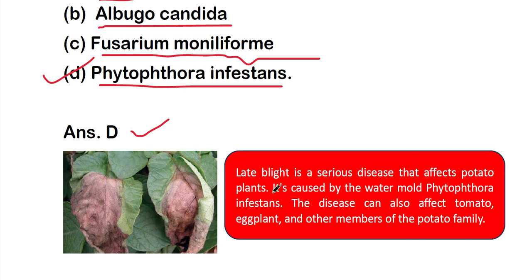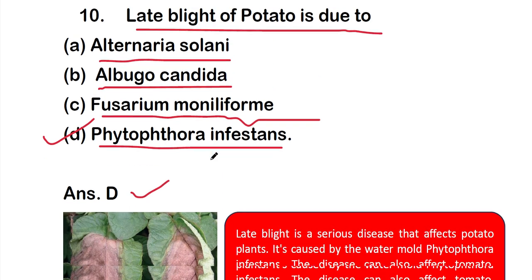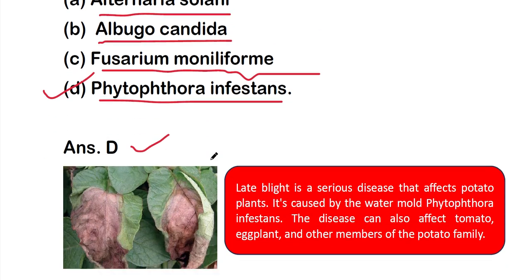Late blight is a serious disease affecting potato plants, caused by the water mold Phytophthora infestans. The disease can also affect tomato, eggplant, and other members of the potato family.